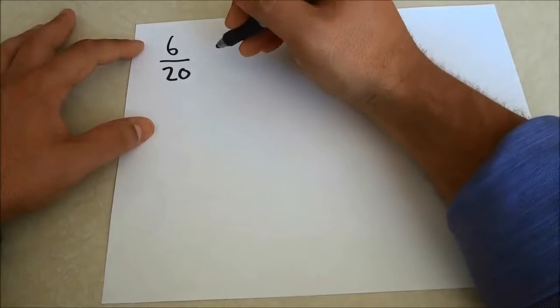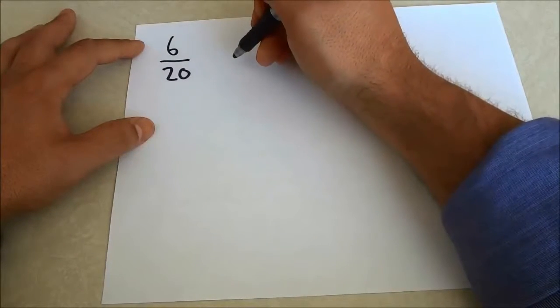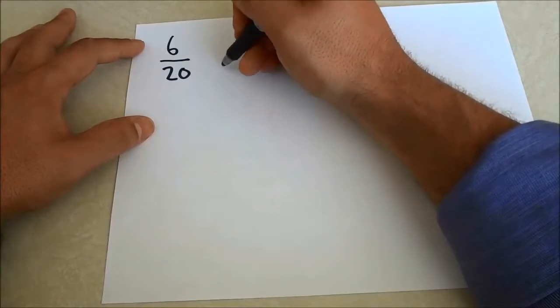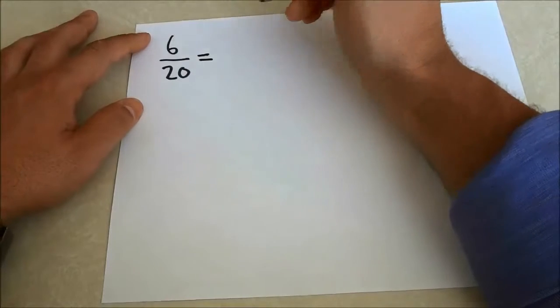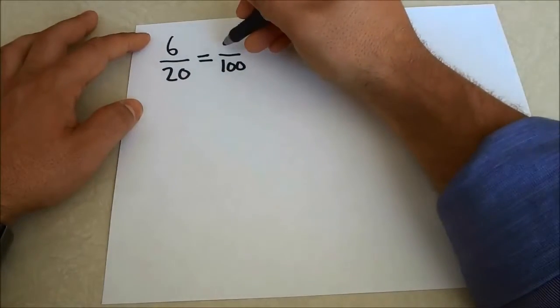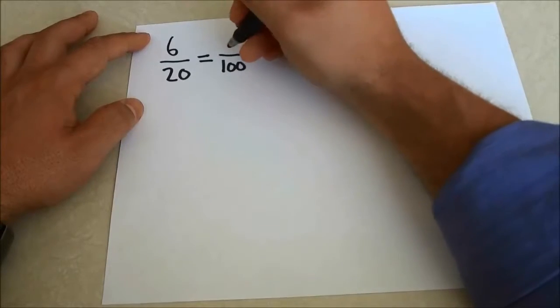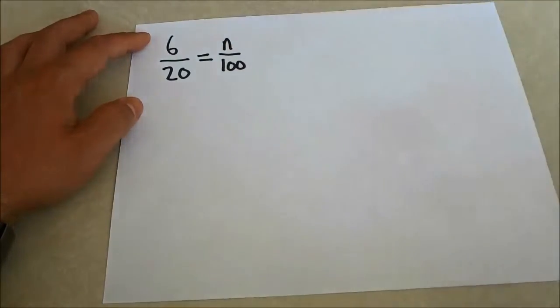In order to convert it to a percent, I have to find out an equal fraction that has 100 as the denominator or the bottom number. We are trying to find out an equal fraction that has 100 as the denominator but we don't know what the numerator is, the top number. So we are going to put n just because we don't know what it is yet.